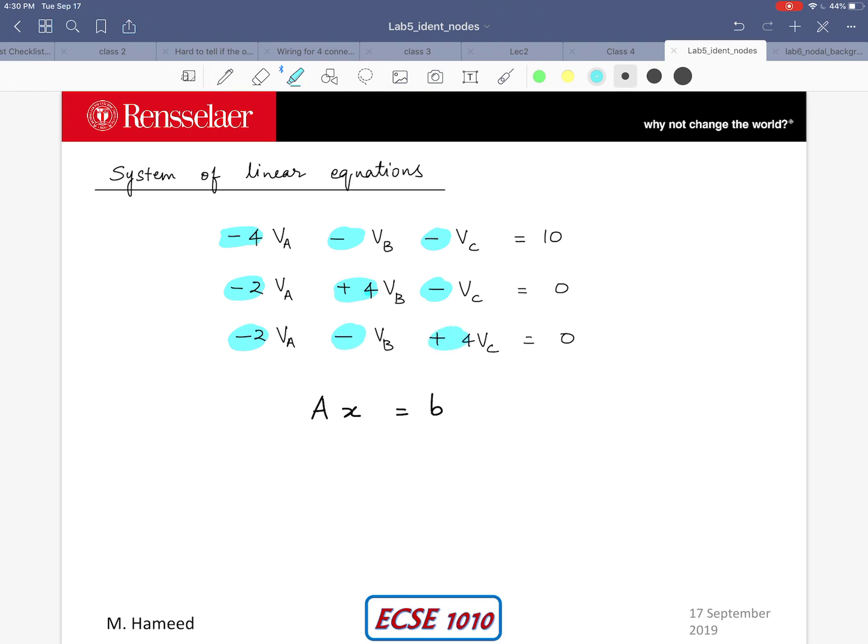So I can write matrix form as AX equals B and this is matrix multiplication. A is my matrix which has elements minus 4, minus 1, minus 1, negative 2, positive 4, negative 1, negative 2, negative 1, and plus 4. Those are my known coefficients of VA, VB and VC. So I'm going to write that over here. A is a square matrix with my first row being negative 4, negative 1, negative 1. My second row being negative 2, 4, negative 1. My third row being negative 2, negative 1 and 4.